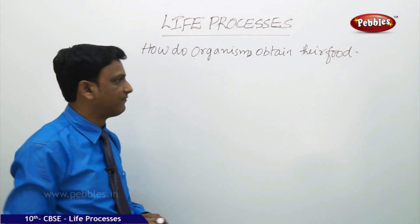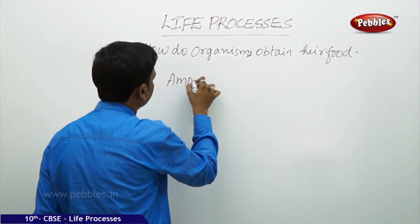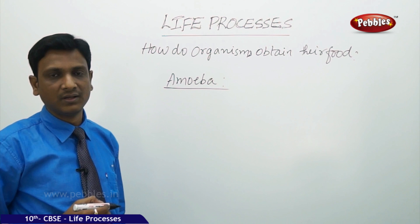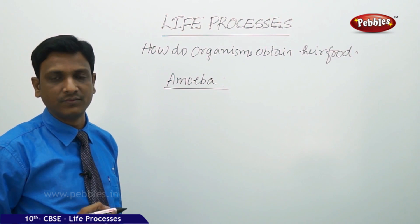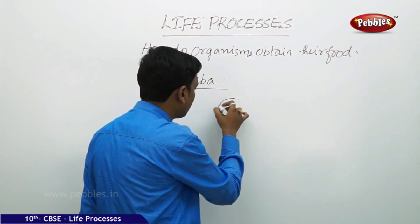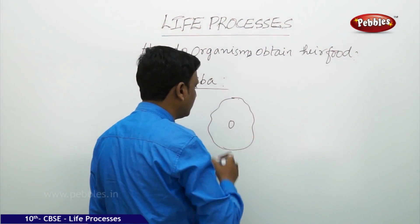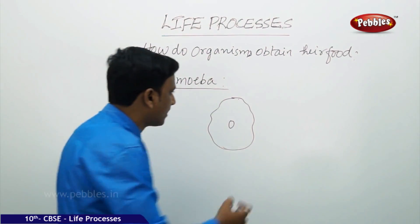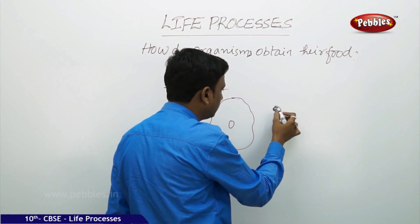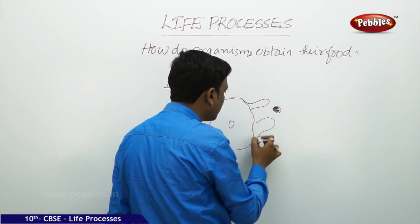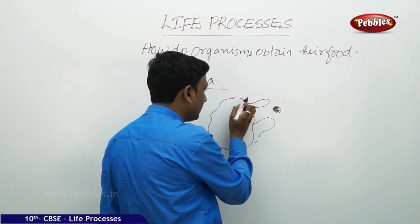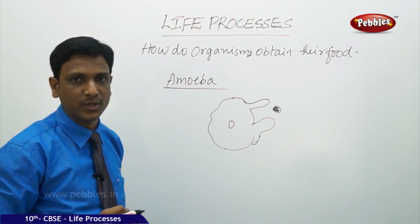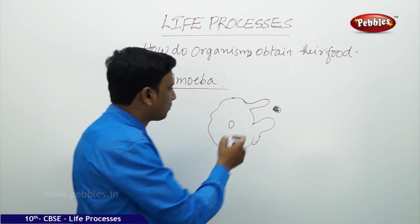How about single-celled organisms? Take amoeba, for example. Amoeba is a single-celled aquatic organism that lives in moist and wet places. Its body is made up of only one cell throughout its life. So how can it possess special structures? When food is close to the amoeba, it produces special folds in its cell membrane. The cell membrane folds and gives out projections called pseudopodia, meaning false feet.